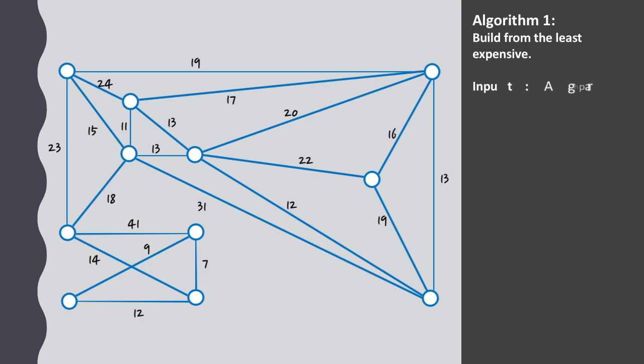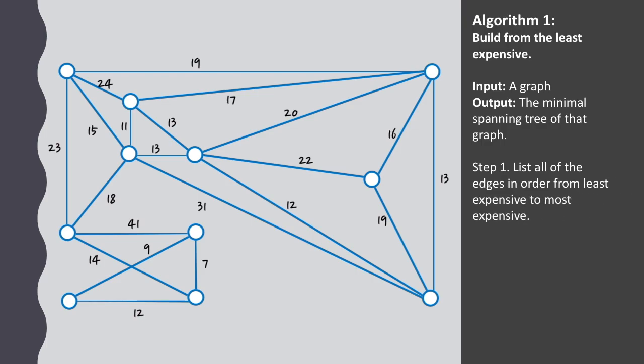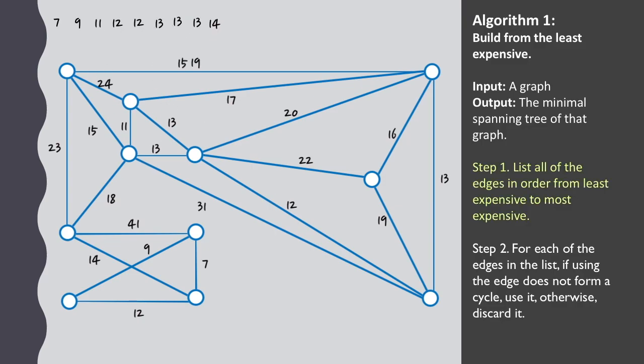These two algorithms allow us to approach the problem systematically. In Algorithm 1, we go through the edges one by one and discard any edges that form cycles. This way, we're looking to build our tree from the cheapest edges possible. We can list the edges in order to help us keep track.